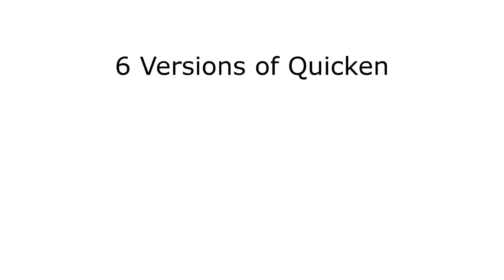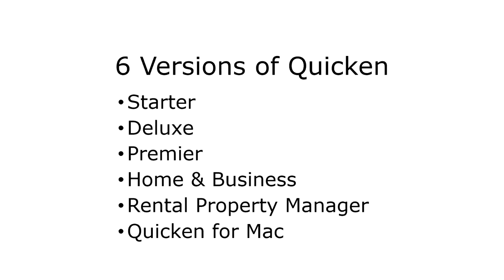There are six versions of Quicken: the Starter, Deluxe, Premier, Home and Business, Rental Property Manager, and a version for Mac.